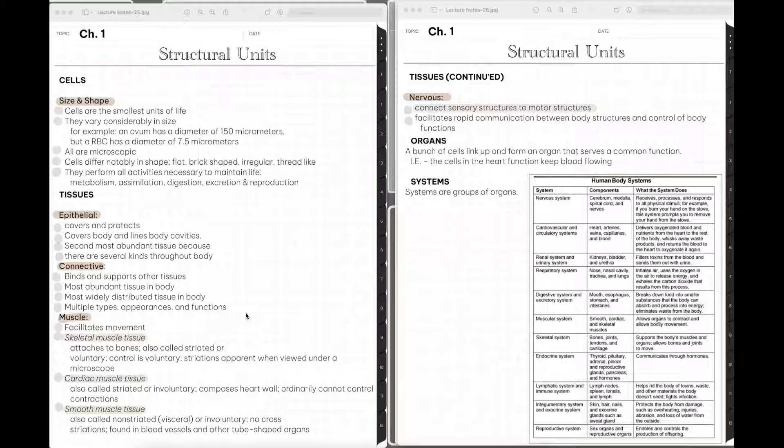So the last type of tissue is nervous tissue. And this tissue connects sensory structures to motor structures. So what that does is helps to facilitate rapid communication between body structures and also helps aid in the control of body functions.